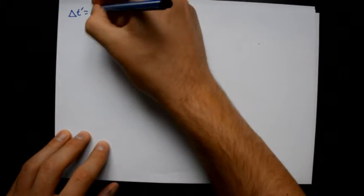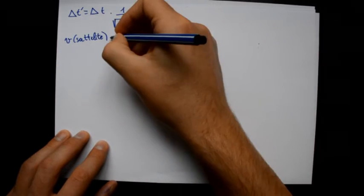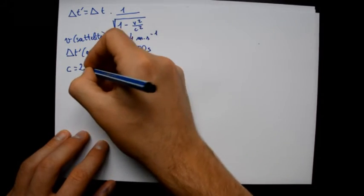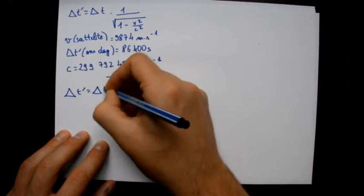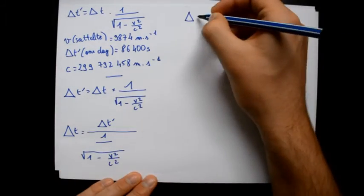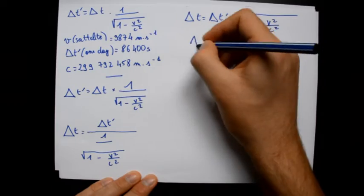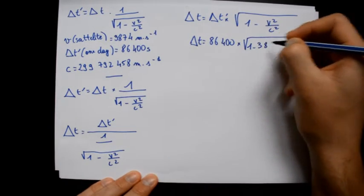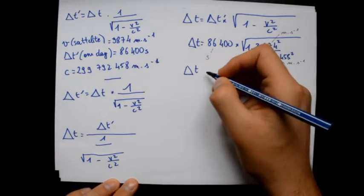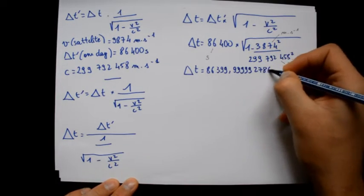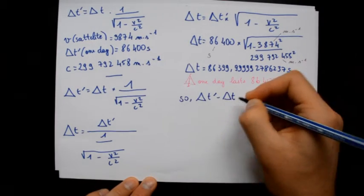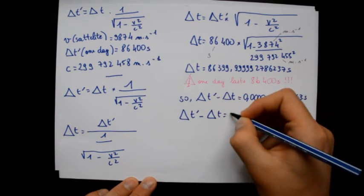And now, let's show how important it is for the clocks to be synchronized. And so, let's start the calculations. Here we have the special relativity formula. And so, here are some facts, such as the speed of the satellite in meters per second, and the delta T prime for one day in seconds too. And here is the speed of light in meters per second too. And so, here we go. Our aim is to find delta T prime minus delta T. Let's go.